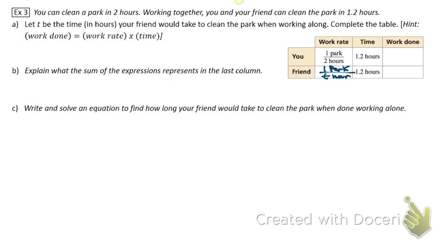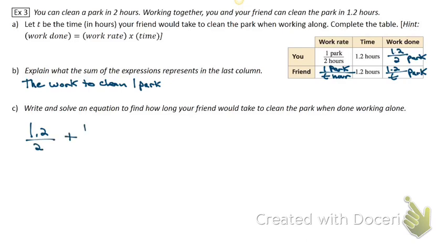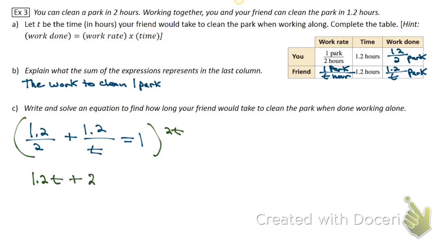Your work rate is one park over 2 hours, your friend's is one park over t hours. Your work done is 1.2 over 2 and your friend's work done is 1.2 over t. The work to clean one park means you add the two rates together and that cleans one park, and then you can use that equation to figure out how much time your friend needs to work alone.